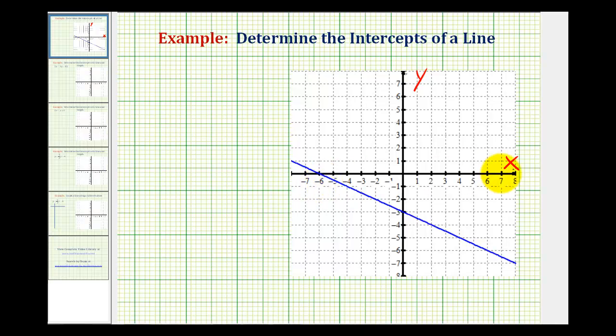So we can see the line crosses the x-axis at negative 6, so negative 6 is our x-intercept. And we can also see the line crosses the y-axis at negative 3, so the y-intercept is equal to negative 3.